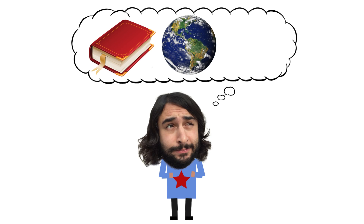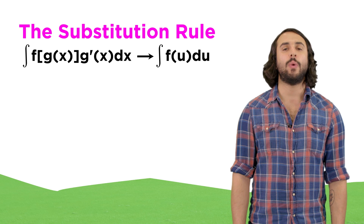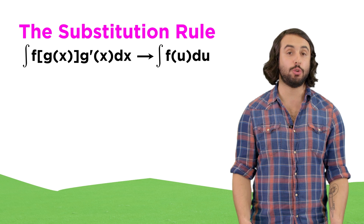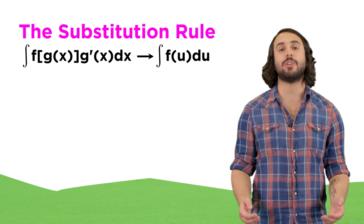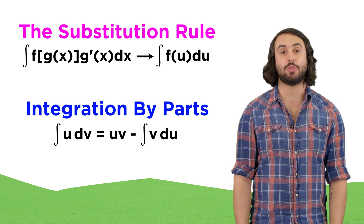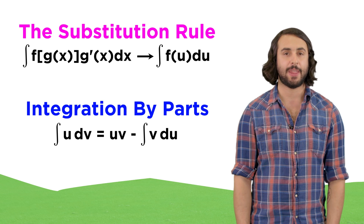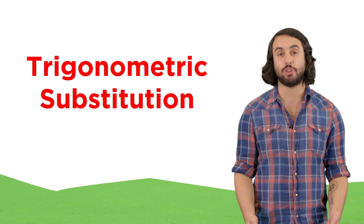It's Professor Dave, let's tackle integration by trig substitution. We have already learned two handy tricks for integrating. The first was the substitution rule, which was useful if the integrand could be expressed as the product of a function and its derivative. Then there was integration by parts, which was useful for a variety of integrands expressed as the product of two functions. Let's learn one more trick right now, a technique called trigonometric substitution.